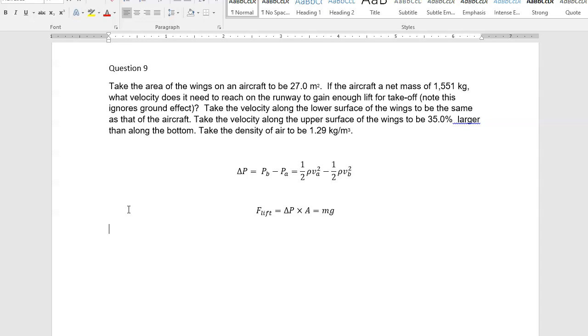And we're going to take the velocity on the upper surface to be 35% larger than on the bottom. And we've got the density of air, 1.29 kilos per cubic meter. So the question is, how do we get to what velocity do we need?